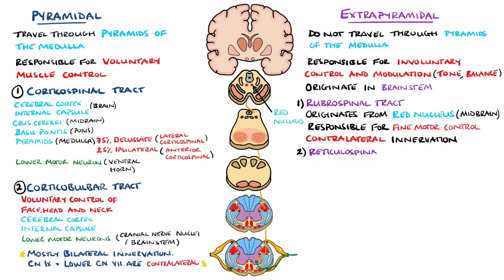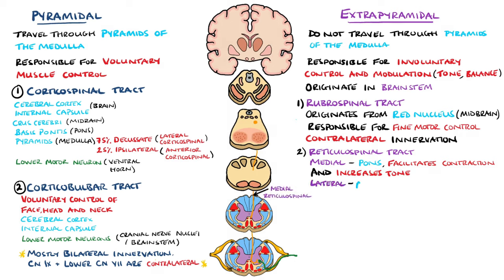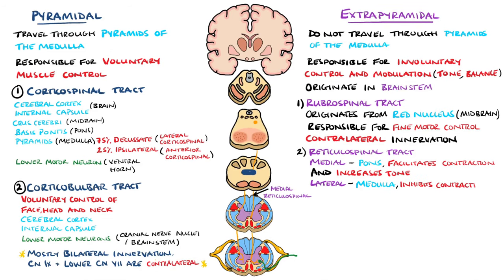Next we have the reticulospinal tracts, of which there are two. The medial or pontine reticulospinal tract originates from the pontine reticular formation and facilitates voluntary muscle movement; it excites the antigravity extensor muscles and increases muscle tone. In contrast, the lateral or medullary reticulospinal tract comes from the medullary reticular formation, shown here in dark blue, and this inhibits voluntary muscle movement and decreases muscle tone.